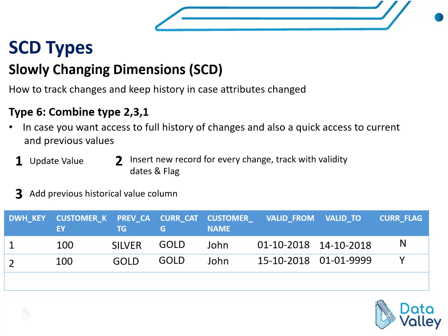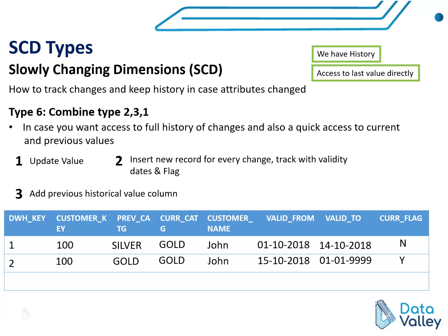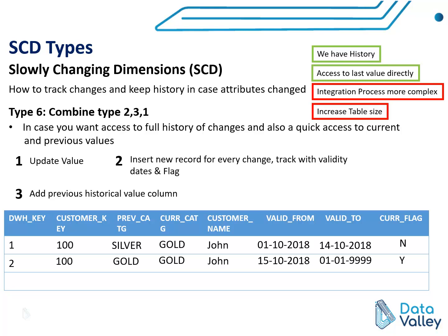What are the advantages and disadvantages of Type 6? The advantages are: we have detailed history, tracking every single change in attributes as in Type 2, and we can access the previous value directly as in Type 3. The disadvantage is that the integration or ETL process becomes more complex, because we perform multiple operations — both inserts and updates — together. We also increase table size by adding more columns for each tracked attribute and more records for each change in the source system.